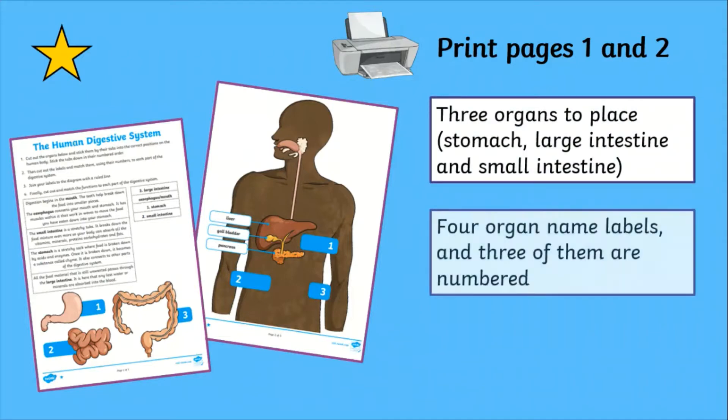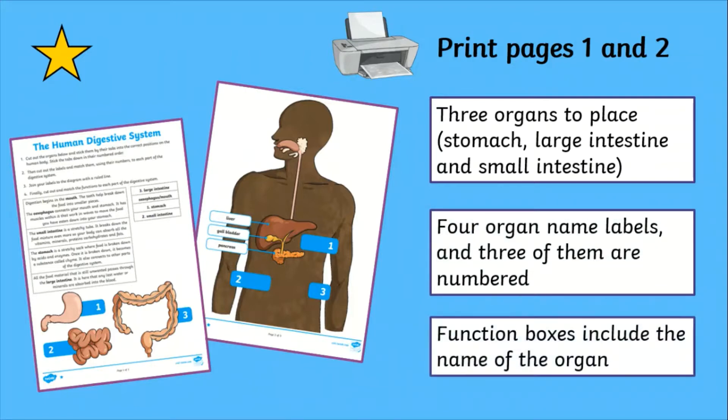There are four name labels with the added support of numbers matching the organ pictures, and the function box descriptions include the name of the organ being described.